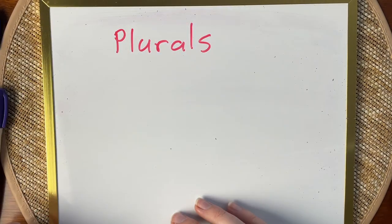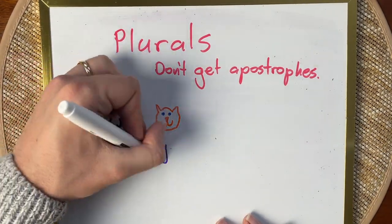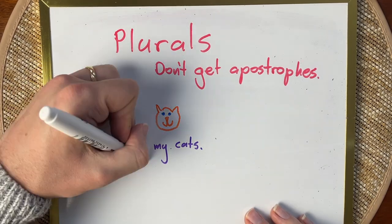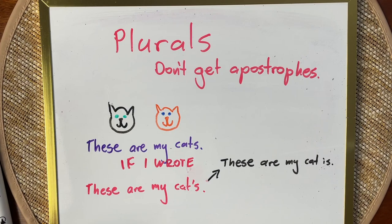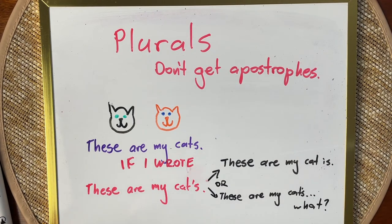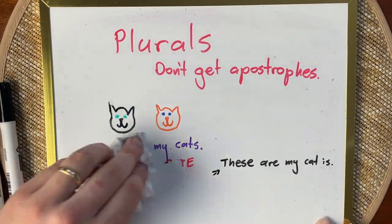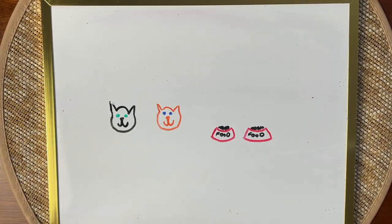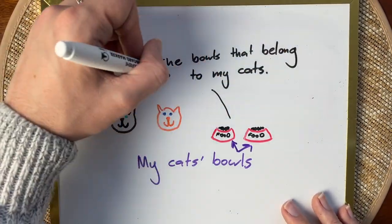Let's talk about plurals. Plurals don't get apostrophes. I can talk about my cats — I have two cats. I could write 'these are my cats' with no apostrophe. If I did put an apostrophe, it becomes a contraction — 'these are my cat is' — and that makes no sense. Or it could show possession: 'these are my two cats' — cats what? It doesn't make sense. When you have a plural, you don't give it an apostrophe. However, if the plural nouns possess something, like 'my cats' food bowls' — the food bowls that belong to both of my cats — I do give it an apostrophe. But to show it's a plural that also has possession, I put the apostrophe after the S.